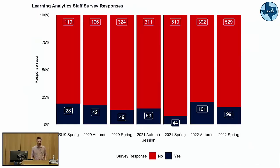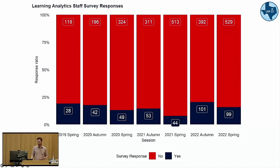We send out a survey when we send the last report at the end of session, which shows the final results for the subject along with student interaction information. We encourage the academic to fill out a survey about their experience with the reports. The response rate hovers at around 15–16%. There is some variation due to the impact of the pandemic and timing of academic leave. Of the 500–600 subjects that now receive these reports, we get that 15–16% response rate.